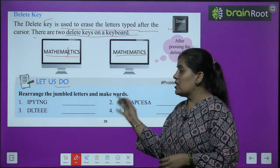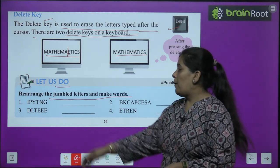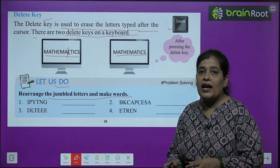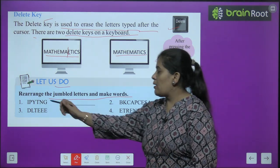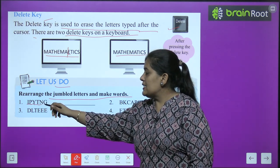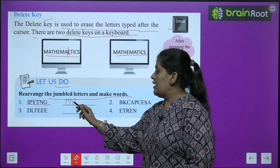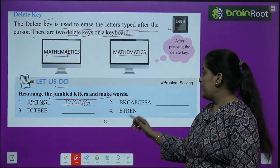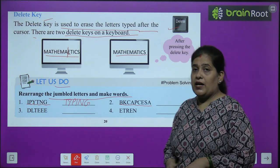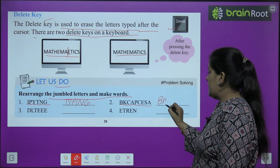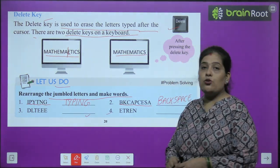Now let's do an activity: rearrange the jumbled letters and make words. The first one is I-P-Y-T-N-G. The answer is 'TYPING' — T-Y-P-I-N-G. The next one is B-K-C-A-P-C-E-S-A, which makes 'BACKSPACE.' The remaining two you will do by yourself.